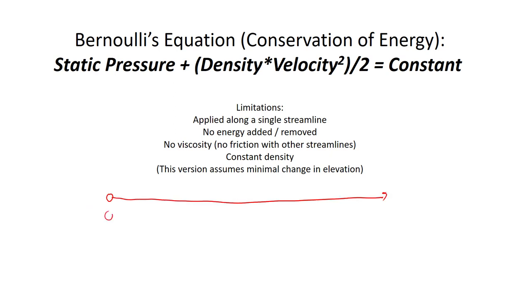If I add another streamline, Bernoulli's law tells me the relation between speed and pressure along that second streamline, but it doesn't tell me anything about the relationship between the pressure and the velocity here and the pressure and the velocity there.